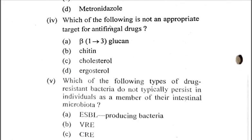Part four: Which of the following is not an appropriate target for antifungal drugs? Note there is a spelling mistake — it should be 'antifungal' (F-U-N-G-A-L). The options are A) beta-1,3-glucan, B) chitin, C) cholesterol, D) ergosterol. The correct option is C, cholesterol, as it is a component of human cell membranes, while beta-1,3-glucan, chitin, and ergosterol are found in the fungal cell wall and fungal cell membrane.